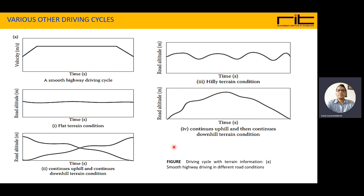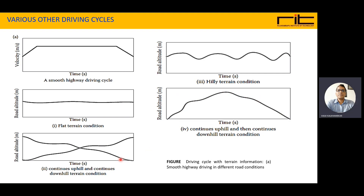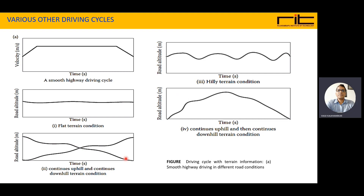The fourth example is continuous uphill followed by continuous downhill terrain. Up to a certain point it is a continuous uphill condition, after which it transitions to downhill. Compared to the hilly terrain, here one path goes uphill and then downhill — the same route ascends and then descends.